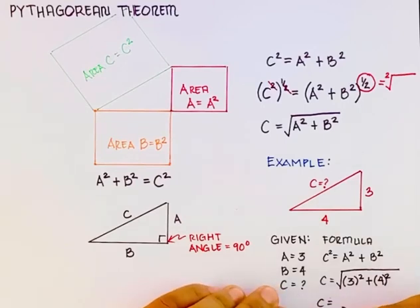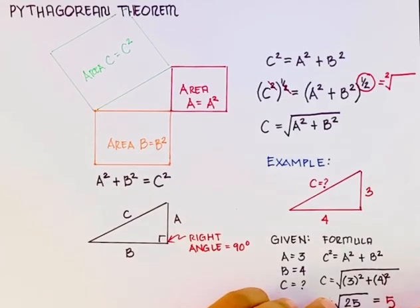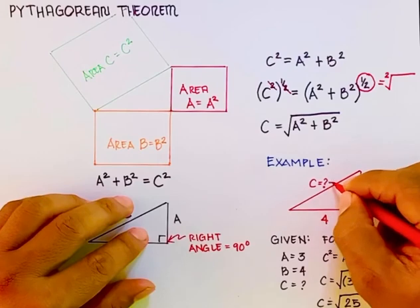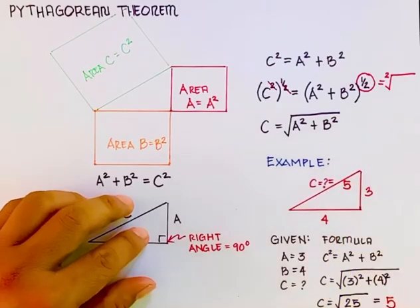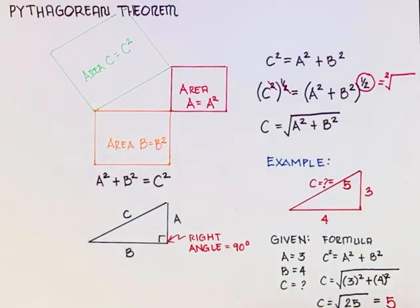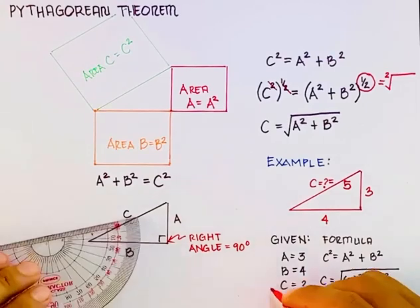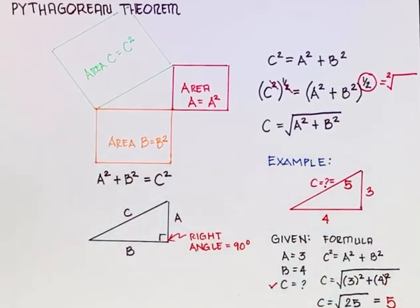That will be equal to 25. So the square root of 25 is equal to 5. Therefore, C is simply equal to 5. That's the answer for our problem.